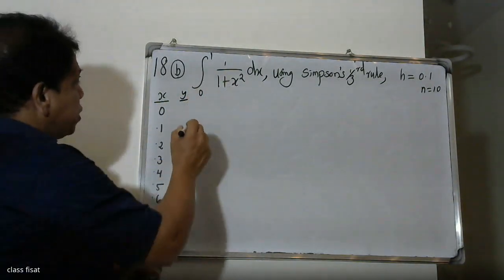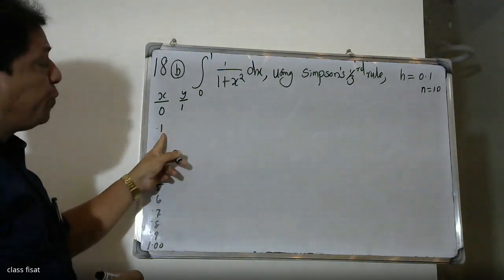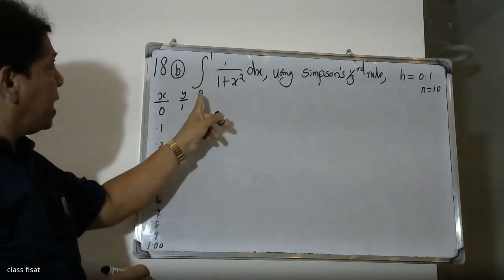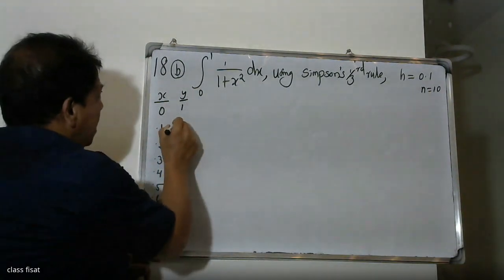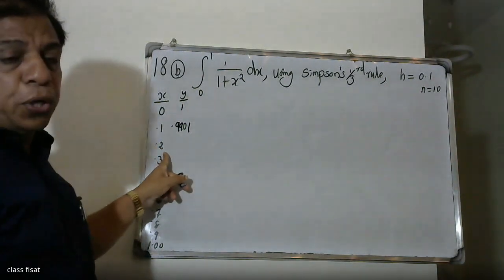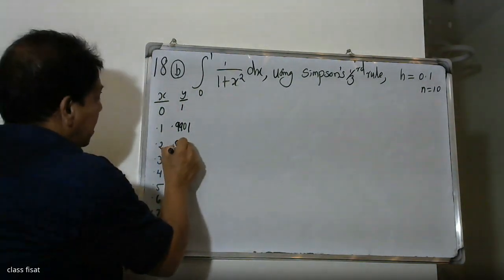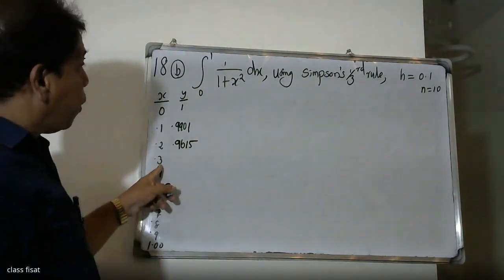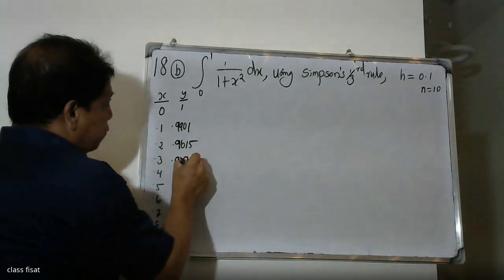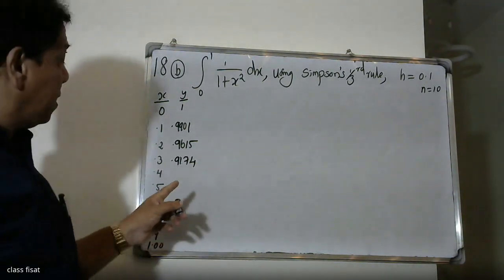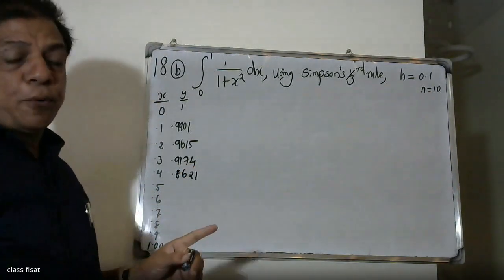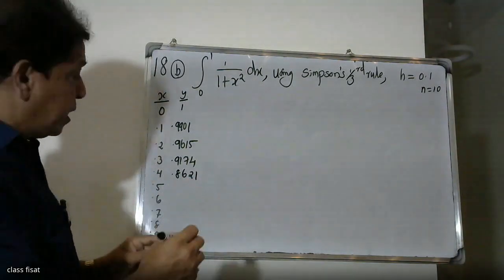The function is f(x) = 1/(1+x²). When x=0.1, f(x) = 0.9901. When x=0.2, f(x) = 0.96154. When x=0.3, f(x) = 0.9174. When x=0.4, f(x) = 0.8621. When x=0.5, f(x) = 0.8.